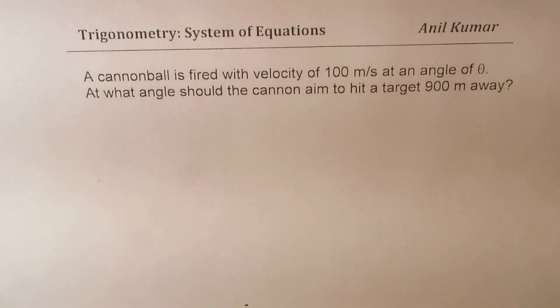The question here is: a cannonball is fired with velocity of 100 meters per second at an angle of theta. At what angle should the cannon aim to hit a target 900 meters away?